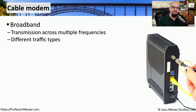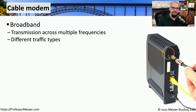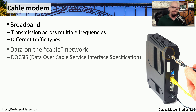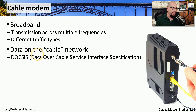This means you can have many different traffic types, or even television channels, using different frequencies on the same cable. The data frequencies on that cable are separated out by the cable modem using a standard called DOCSIS.